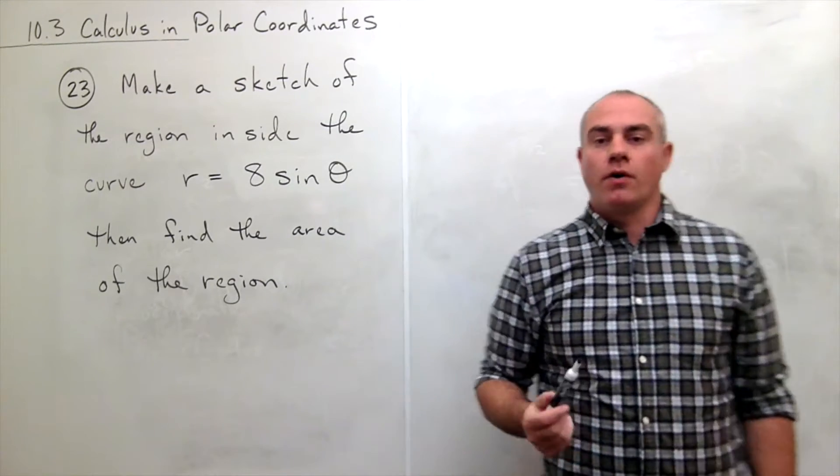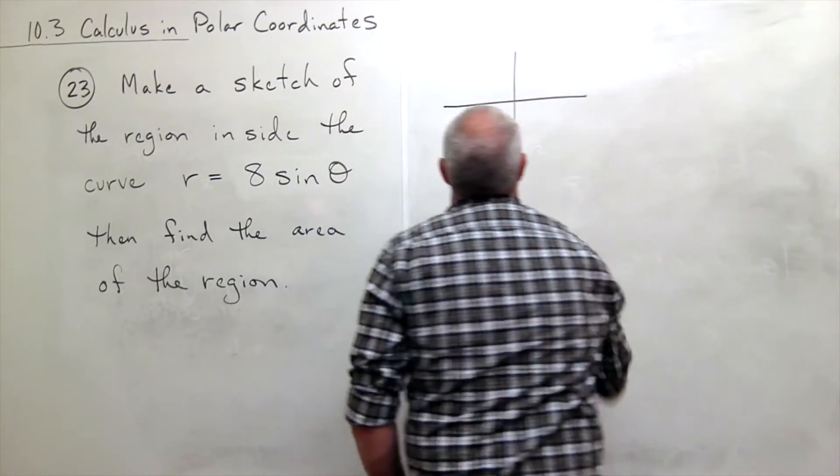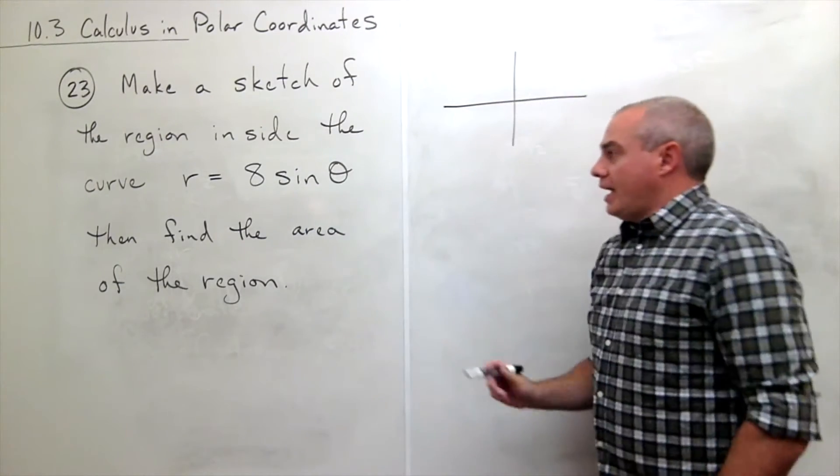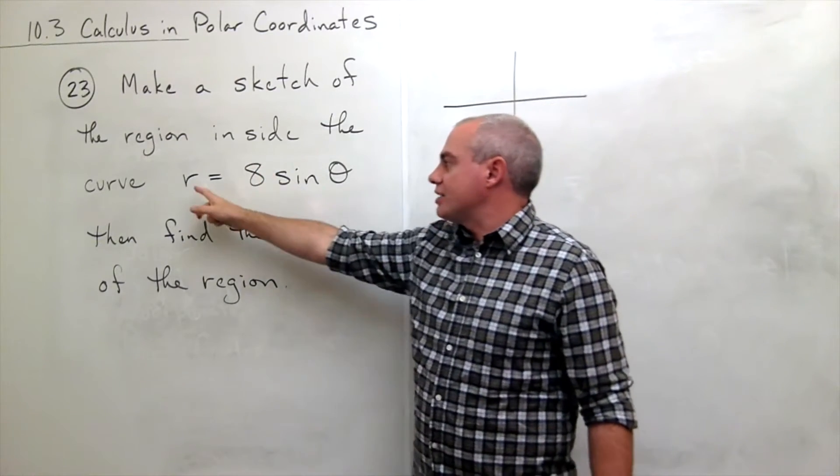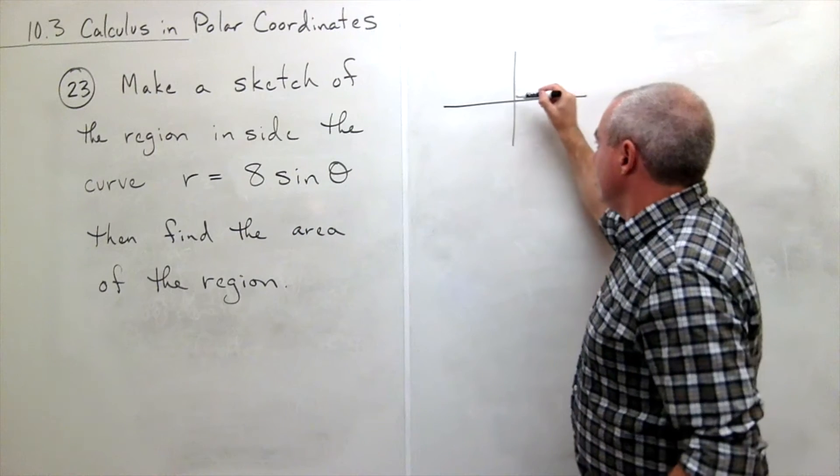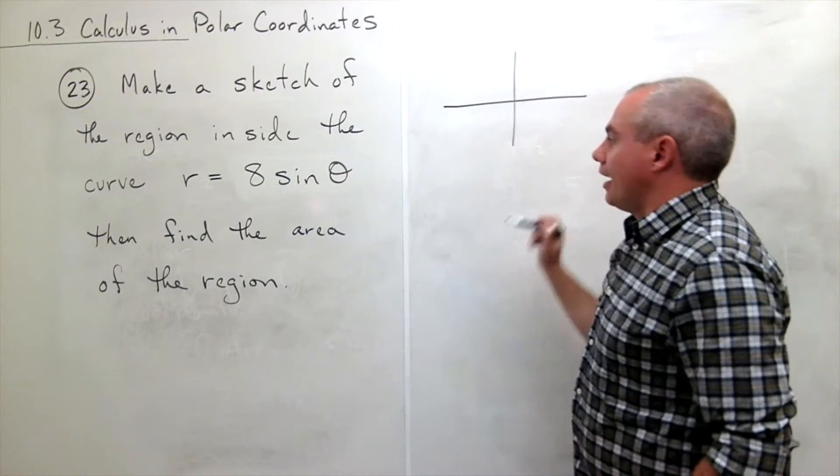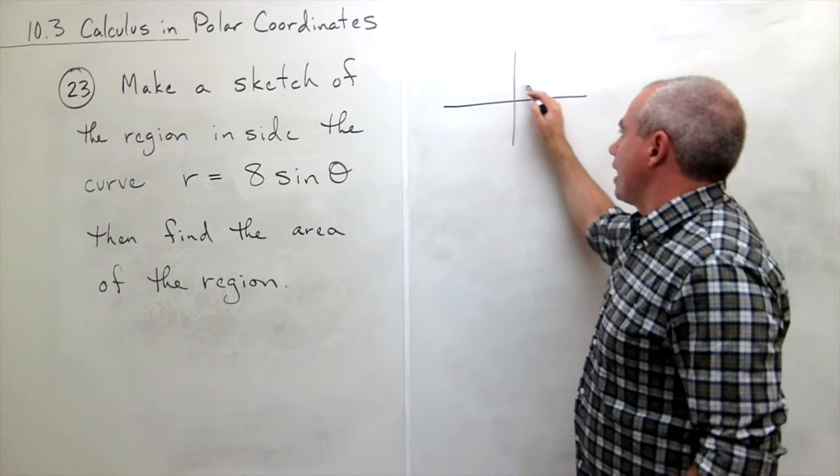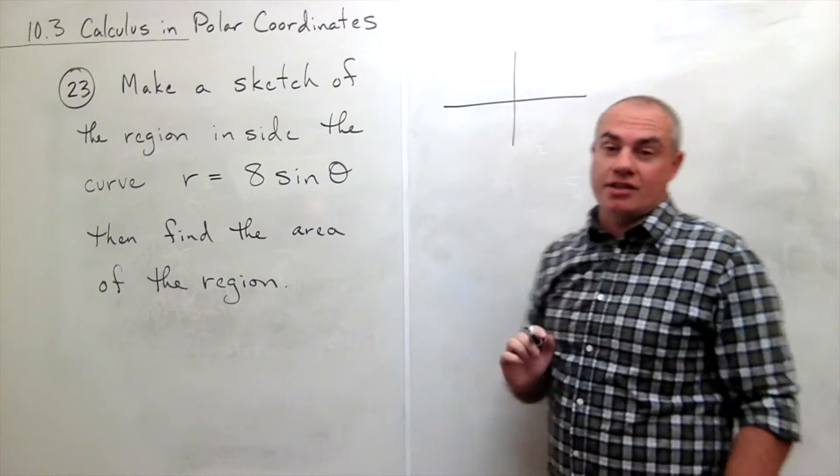Okay, so let's start out by drawing our x and y axis. r equals 8 sine of theta. If that 8 were not there and I just have r equals sine of theta, that is a circle of diameter 1 that is sitting just right on top of the x-axis. So it's tangent to the x-axis.